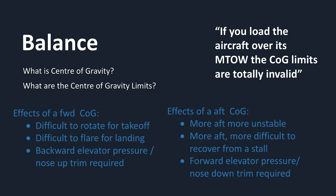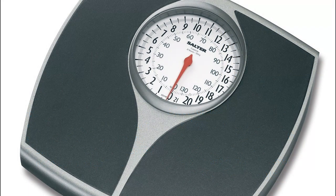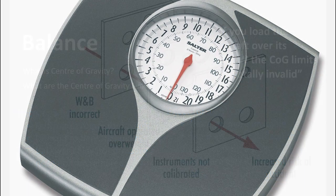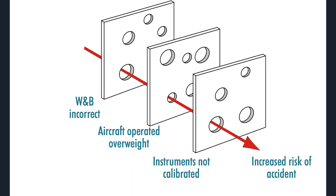RL's aircraft have been weighed with uncalibrated scales for decades, and some aircraft empty weights may not be accurate. If the aircraft's empty weight is incorrect, when the aircraft is loaded to its maximum takeoff weight, it may actually be operating above its maximum takeoff weight. Add in other variables such as an uncalibrated airspeed indicator, and we are increasing our risk of accident.